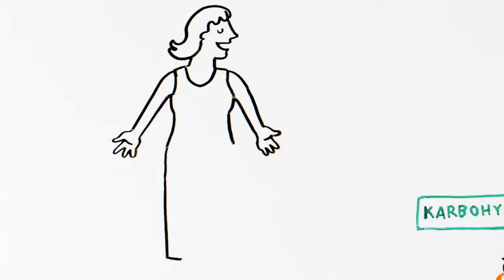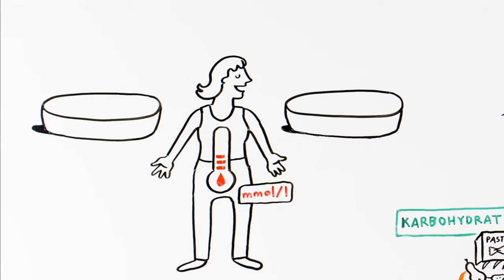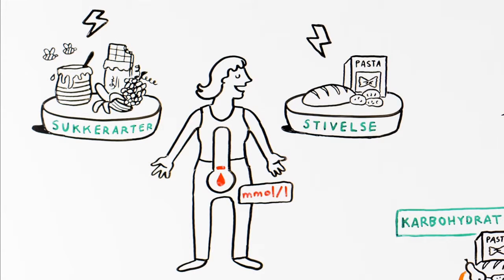It is the carbohydrates in what you eat that affect your blood sugar. There are several types of carbohydrates. The sugars cause the biggest and fastest increase in blood sugar. Starch is rapidly converted into sugar, causing a rapid rise in blood sugar.